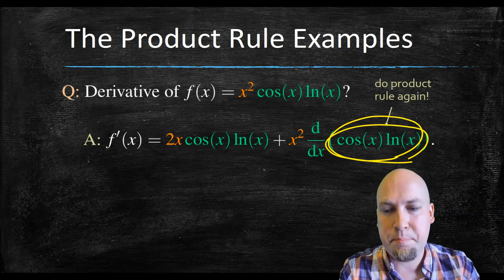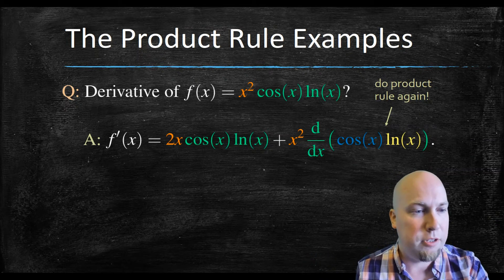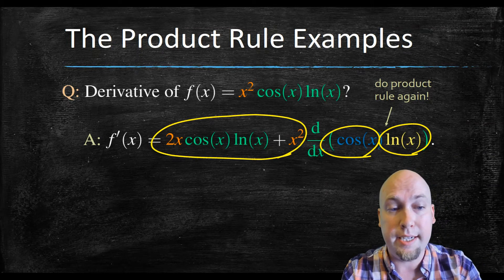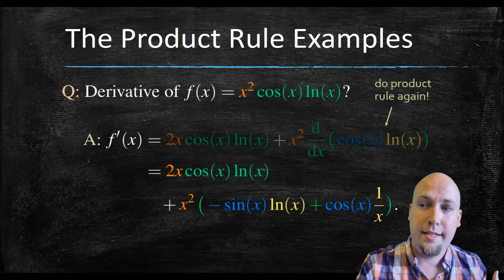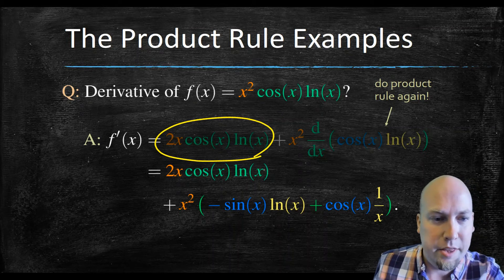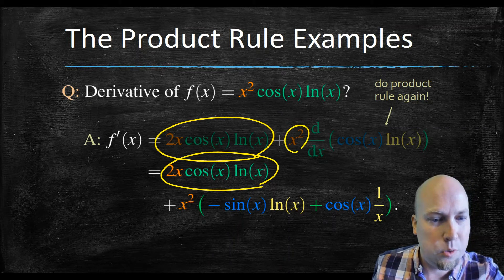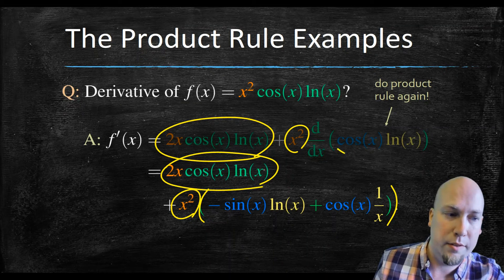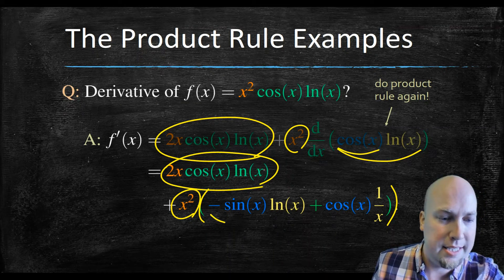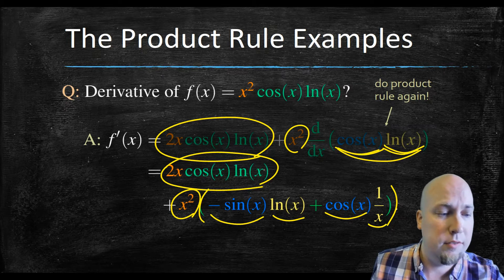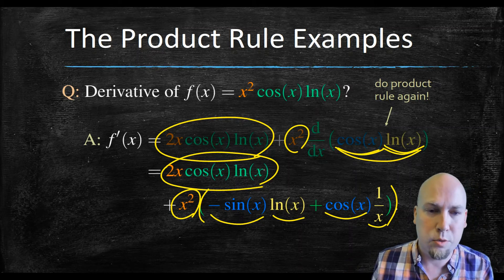For the derivative of cos x ln x, the first function is cos x and the second is ln x. Applying the product rule: the derivative of cos x is minus sin x, times ln x, plus cos x times the derivative of ln x, which is 1 over x. So the full answer is 2x cos x ln x plus x squared times the quantity (minus sin x times ln x plus cos x times 1 over x). It looks like a big ugly mess, but it's just the product rule applied a second time.